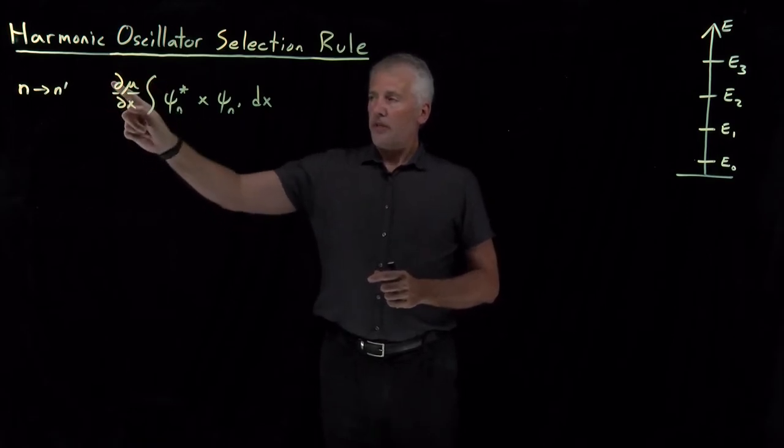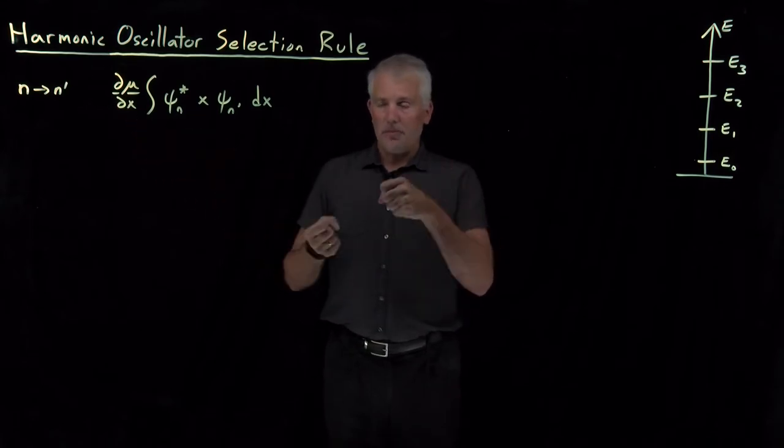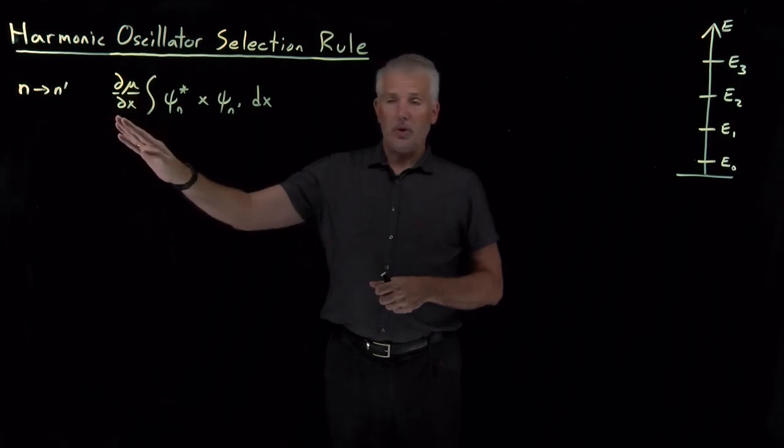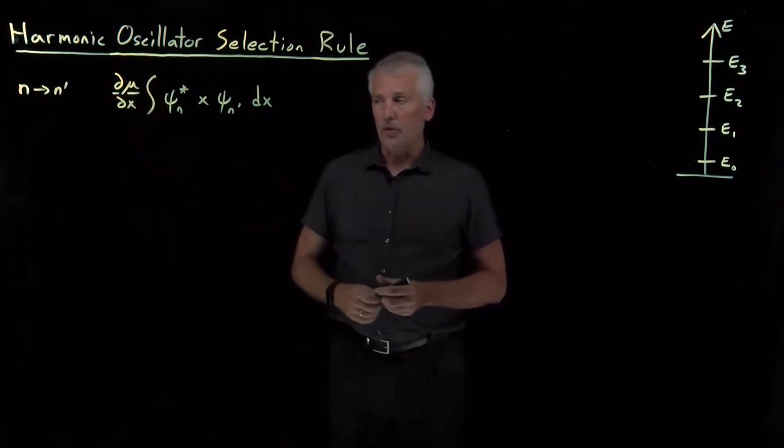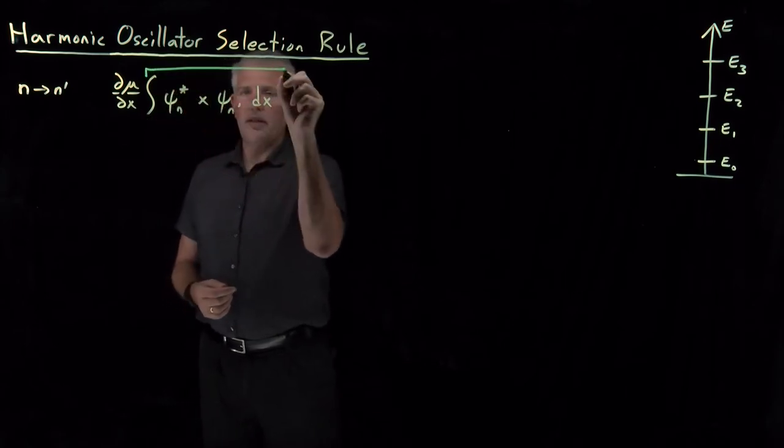There's a rate of change of the dipole moment of the harmonic oscillator with respect to the bond displacement. If that's zero, then the molecule can't absorb any light. That gives us the gross selection rule. What we're interested in now is this integral.